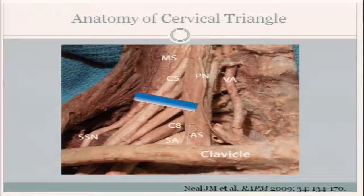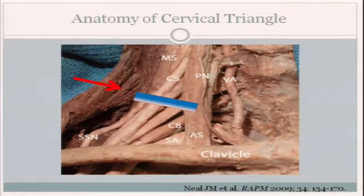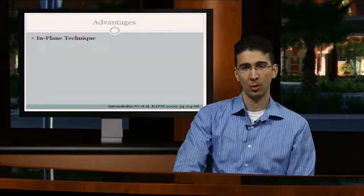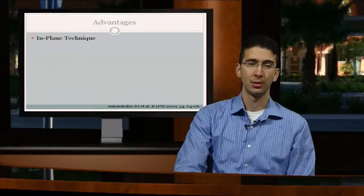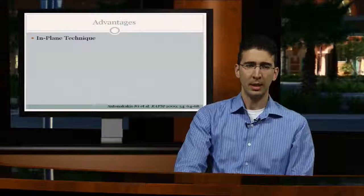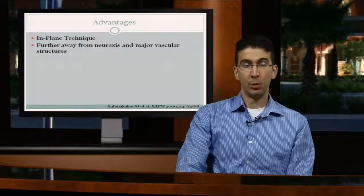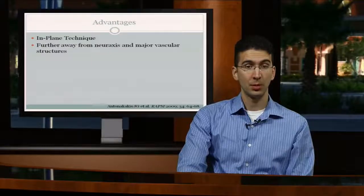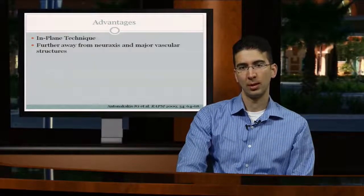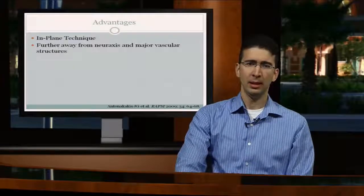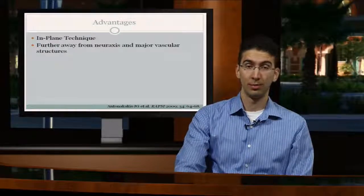With ultrasound, our approach to the interscalene block changed completely — from a fairly anterior insertion site to a very posterior approach. The reasons were threefold. First, it was an in-plane technique, so you could see the entire length of the needle while working, allowing visualization of the tip, shaft, and adjacent structures. Second, we were further away from the neuroaxis and major vascular structures. There was no risk of damaging the phrenic nerve, and we avoided the internal jugular and carotid arteries as we would with an anterior approach.